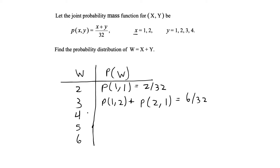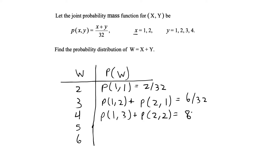w can take on the value 4 two ways: when x=1 and y=3, or when x=2 and y=2. Plugging in the values (1,3) and (2,2) gives us 4/32 plus 4/32, for a total of 8/32. So P(W=4) = 8/32.